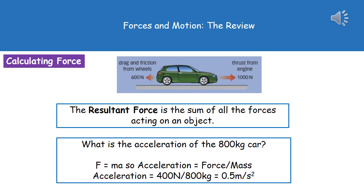The last thing that you need to know for the higher tier paper is what we mean by a resultant force. Sometimes we'll be asked to calculate the acceleration of something that has a force acting in two different directions. What we actually need to do first is calculate our resultant force, which quite simply is the sum of all of the forces acting on an object. In the diagram at the top, we've got the little green car with a thrust force of 1000 newtons going in one direction and then the drag and friction from the wheels, 600 newtons in the opposite direction.